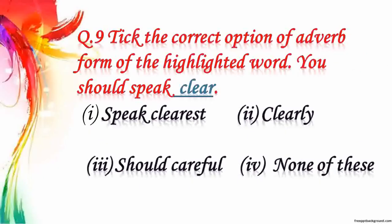Question number 9: tick the correct adverb form of the highlighted word. You should speak dash. The highlighted word is clear. An adverb describes a verb, adjective, or another adverb. So the adverb of the word 'clear' is clearly.